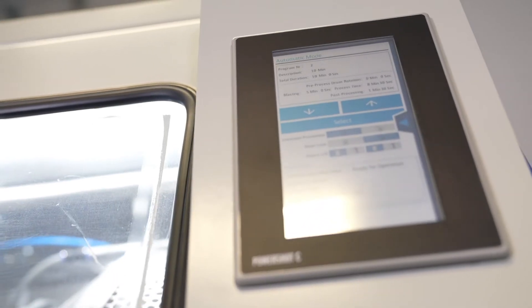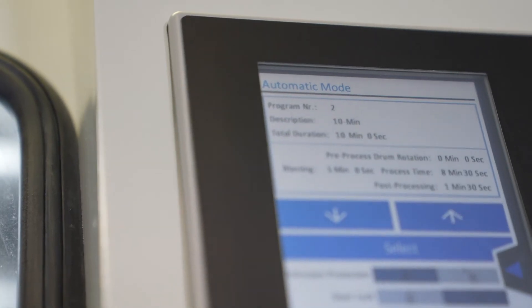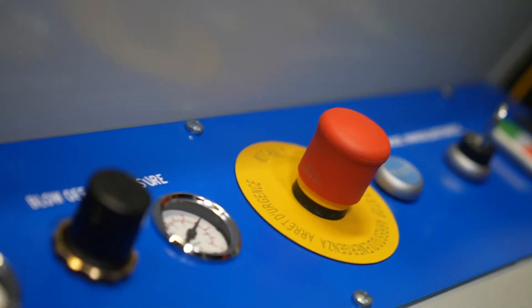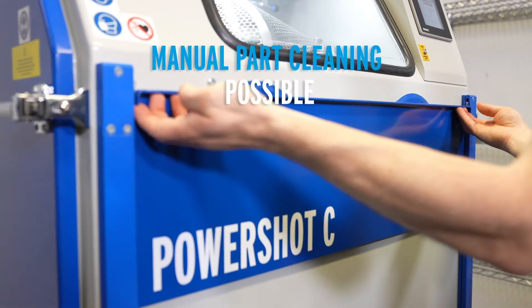The PowerShot C is the industry standard for easy and efficient part cleaning. By efficient I mean an automated process which reduces your required manpower, costs and lead time.